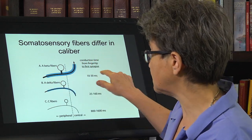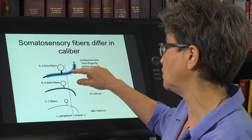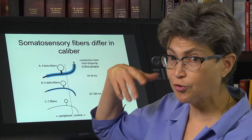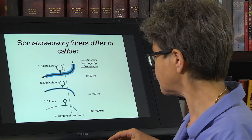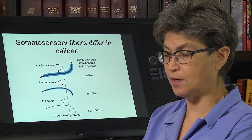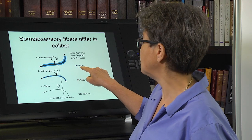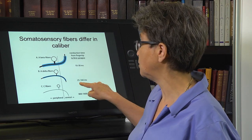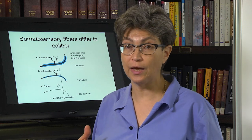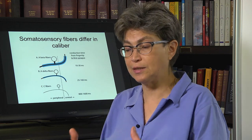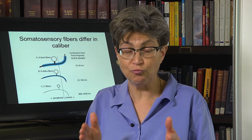These fibers conduct information at very different speeds. A-beta fibers can go as fast as 100 meters per second, whereas A-delta fibers go around 30 meters per second tops, and C-fibers go typically under one meter per second. From the fingertip to the dorsal column nucleus, that would take 10 to 30 milliseconds for an A-beta fiber, 25 to 160 milliseconds for an A-delta fiber, and over a second for a C-fiber.